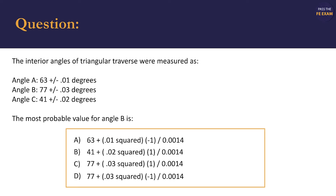We're given the interior angles of a triangular traverse and their measurements. Angle A is 63 plus minus 0.01 degrees. Angle B is 77 plus minus 0.03 degrees. And angle C is 41 plus minus 0.02 degrees. We are then asked for the most probable value for angle B and given 4 choices to choose from.